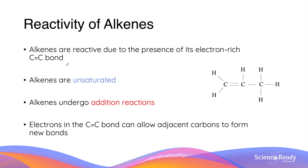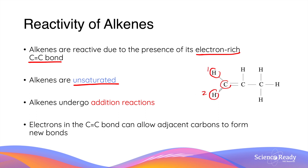Alkenes are reactive due to the presence of their electron-rich carbon-to-carbon double bond. The presence of this double bond is the reason why alkenes are unsaturated compounds. The carbon atoms with the double bond are bonded to three other atoms — one, two, three. It is not saturated because a carbon atom can form a maximum of four bonds.